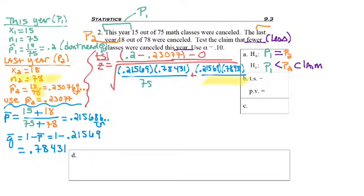So the 0.21569 times the Q-bar of 0.78431. Now remember, this is divided by N1, so divided by 75, and then this formula is plus, even though it's minus in the numerator. The numerator for this second fraction is the same since it's still P-bar times Q-bar, but now we divide by N2 of 78. Entering that whole thing in your calculator, and remember do not use parentheses inside the square root. You should get negative 0.46259. Rounding two places after the decimal will give me negative 0.46.